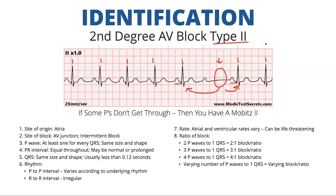The site of origin is again the atria. This is another block in the AV junction, but it's an intermittent block — not a progressive block. There's at least one P wave for every QRS, same size and shape. The PR interval is equal throughout and may be normal or prolonged until that dropped beat. The P to P interval can vary according to the underlying rhythm but should be regular. The R to R interval is irregular because of that dropped beat. The atrial and ventricular rates can vary.